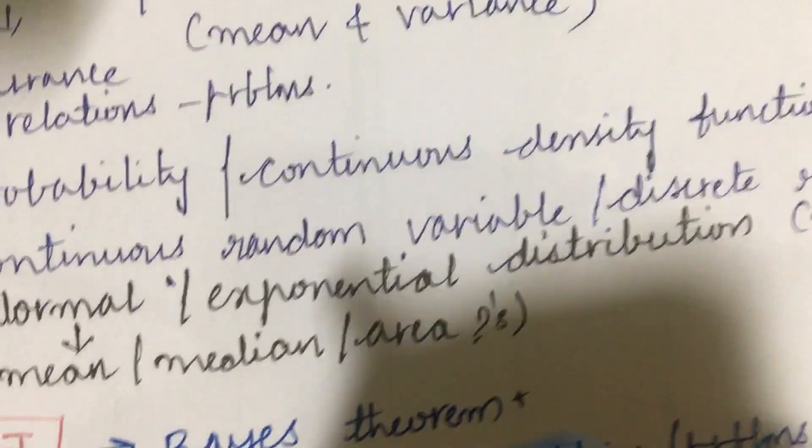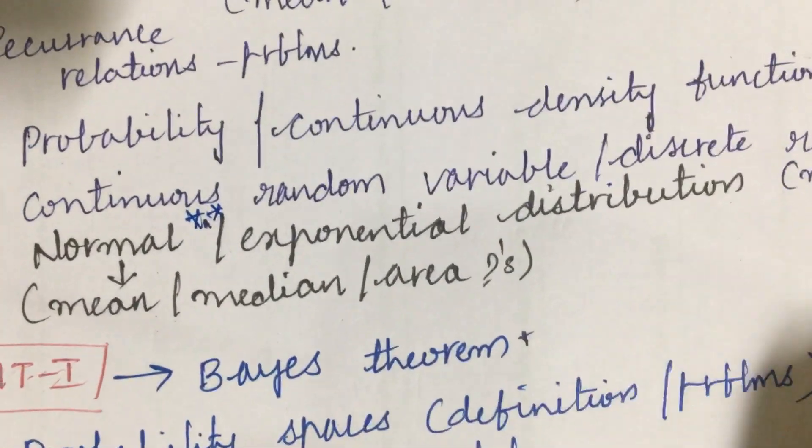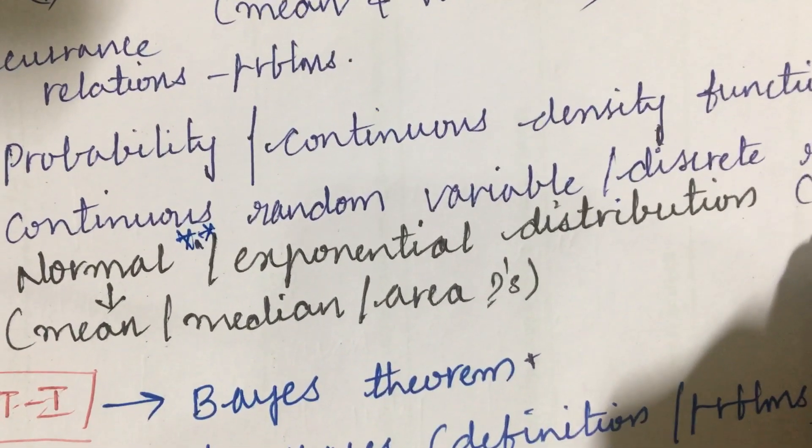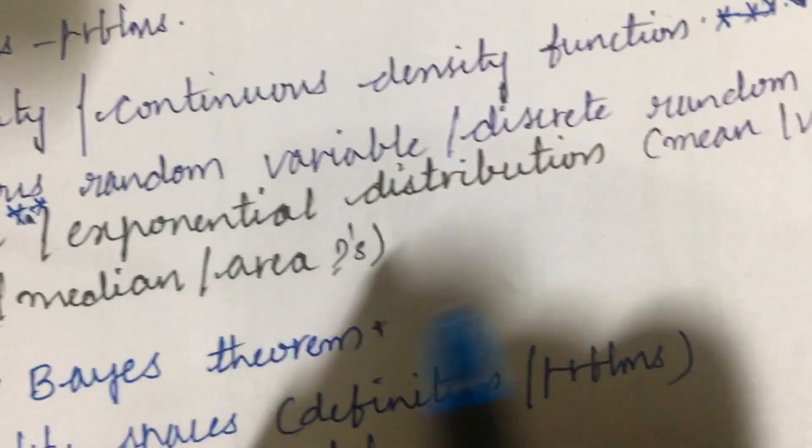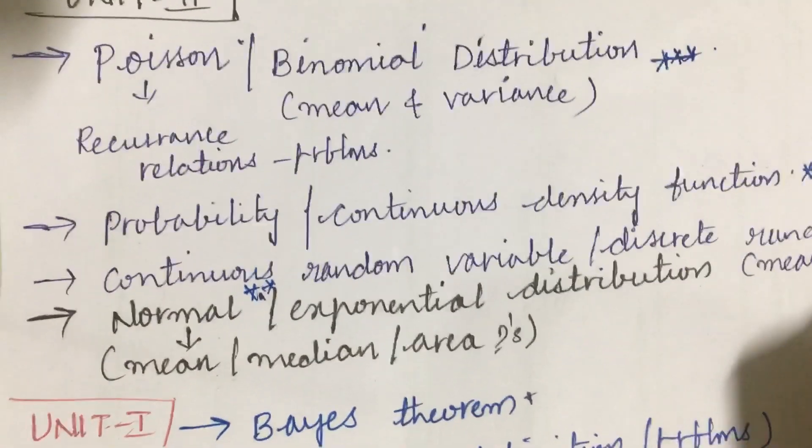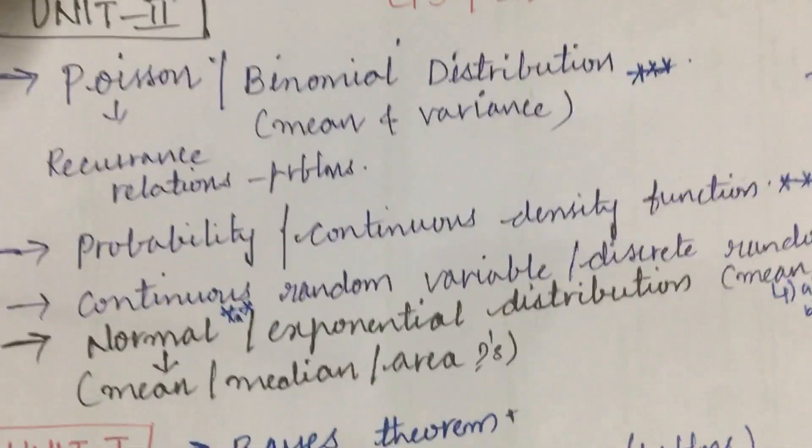Later the continuous random variable as well as discrete random variable, problems and the definitions. And the normal as well as the exponential distribution is one of the gunshot questions where they will be asking you to work out the mean or median or areas as well as the mean and variance problems related to this. And from this two part you will be getting the fourth question, I mean 4A as well as 4B.